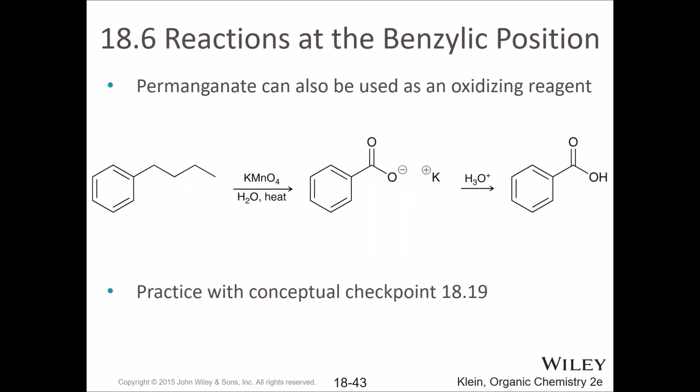Potassium permanganate can also be used. If we take potassium permanganate and treat an alkyl benzene with this, then we get our carboxylate which can be protonated to make a carboxylic acid. Now go to conceptual checkpoint 18.19 which is on page 855 and do that.